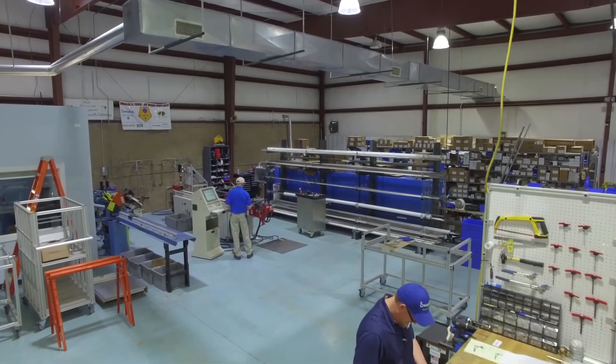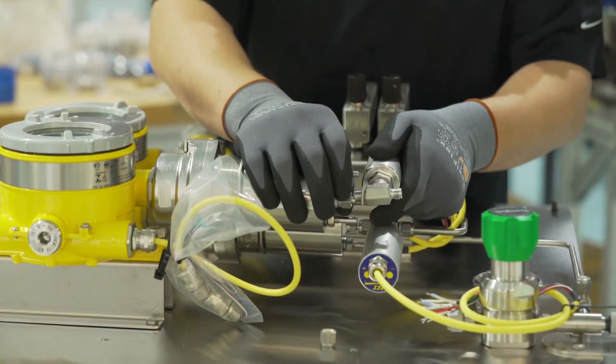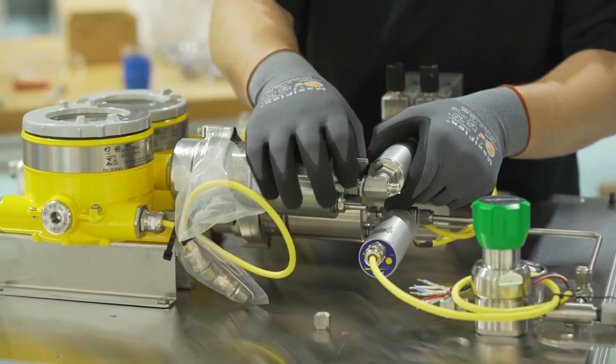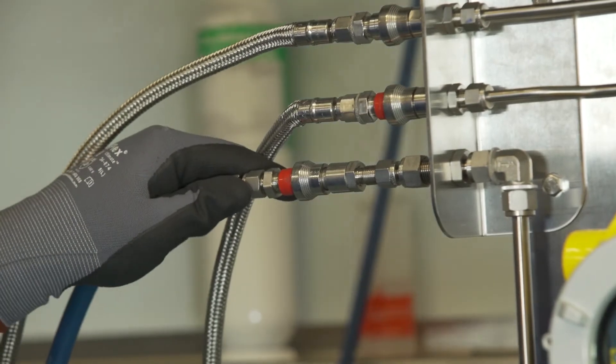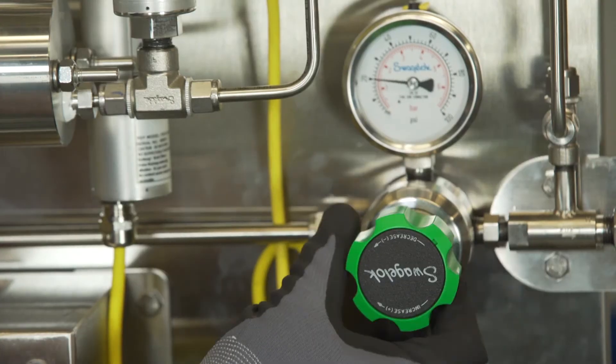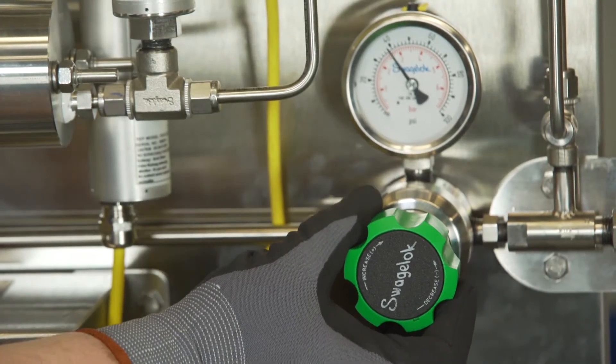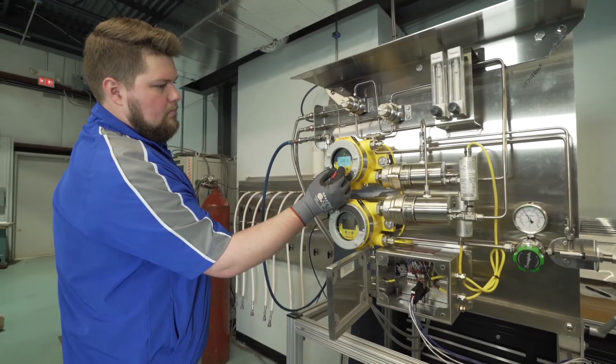Our capabilities include panel fabrication, skid packages, automated systems, small sub-assemblies, and CNC tube bending. Combined with our rigorous quality and testing systems, we guarantee that you receive the highest quality finished products, engineered and assembled to meet your system's needs.